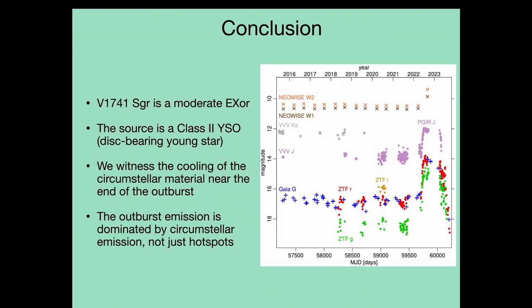Overall, V1741 Sagittarius is a fairly typical EX Lupi-type outburst. However, through detailed examination of this source and the fortuitous detection of titanium oxide absorption features that appear then disappear, we can place new constraints on where the light we are seeing during outburst comes from. Finally, given the fairly late evolutionary stage of this YSO, it may already have formed most of its planets. Thus, it's important to understand how the physics of outbursts may influence planets within these disks. Thank you for your attention.